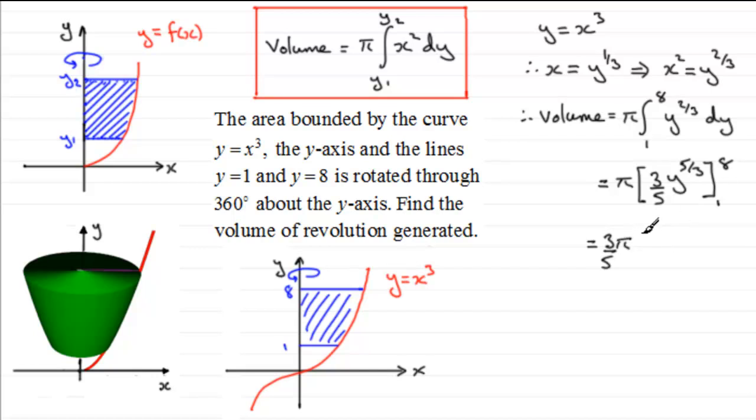Substitute now y in as 8 so we've got 8 to the power of five-thirds and then from this we subtract 1 to the power of five-thirds. And then 8 to the power of five-thirds is going to be the cube root of 8 which is 2, 2 to the power of 5 is 32. And then from this we subtract 1 to the five-thirds so the cube root of 1 is 1, 1 to the power of 5 is 1.